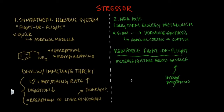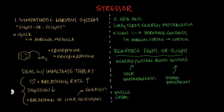The second way cortisol sustains our blood glucose levels is by initiating liver gluconeogenesis, or the synthesis of glucose from non-sugar precursors. The raw materials for gluconeogenesis are supplied by amino acids from the breakdown of muscle, and fatty acids and glycerol from the breakdown of fats.